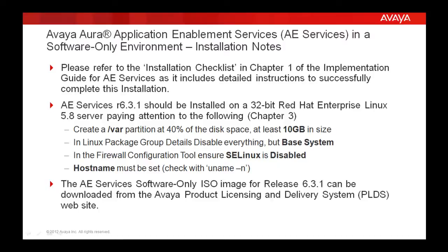Create a var partition at 40% of the disk space, which should be at least 10 GB in size. In the Linux package group details, disable everything but Base System. In the firewall configuration tool, ensure that SELinux is disabled. Then the hostname must also be set, which you can check with the command uname -n.